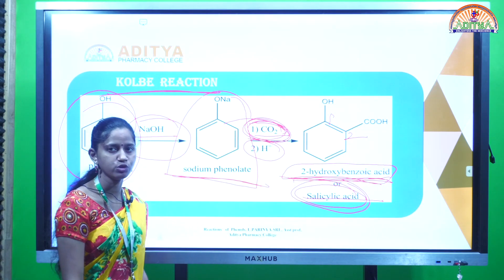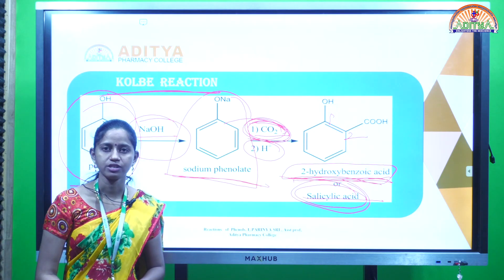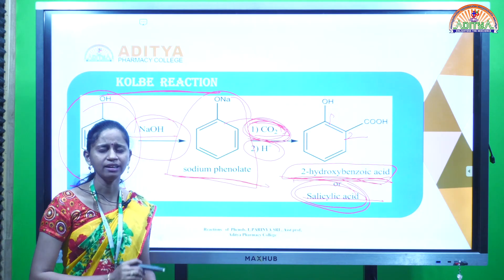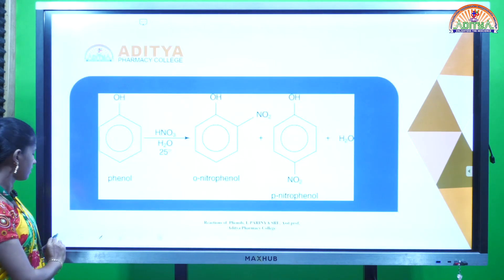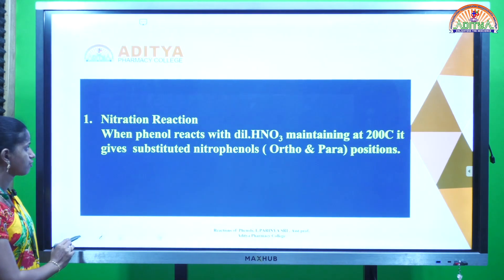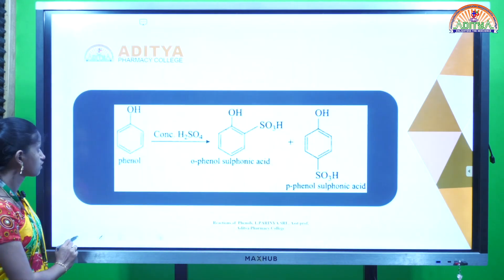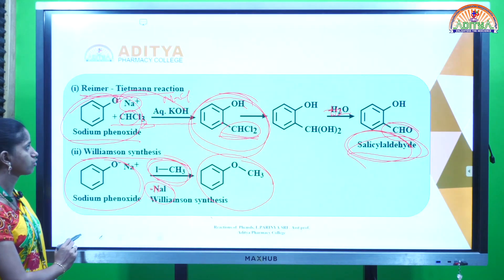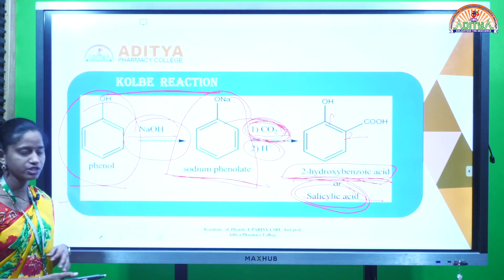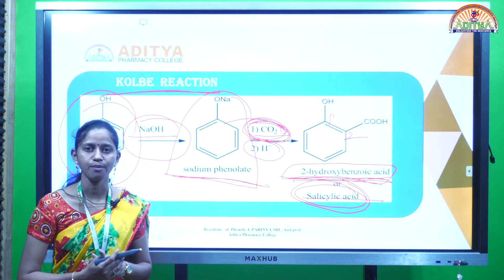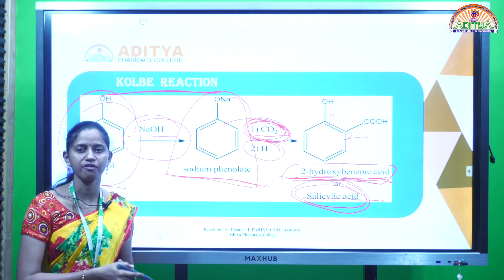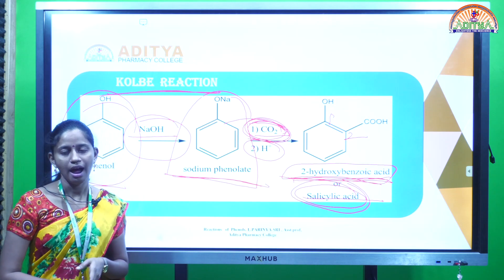These are the chemical reactions of phenols: nitration, sulfonation, halogenation, nitrosation, Reimer-Tiemann reaction, Williamson ether synthesis, and the Kolbe reaction. The phenols undergo all these chemical reactions.